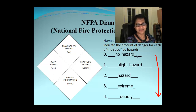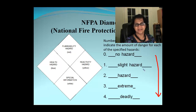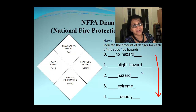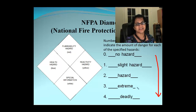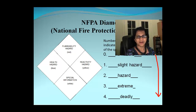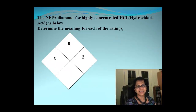Zero is no hazard, one is slightly hazardous, two is an average hazard, three is extreme, and four is deadly. If you keep that in mind, it's simple — you can easily predict what the hazards are.